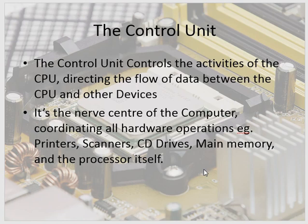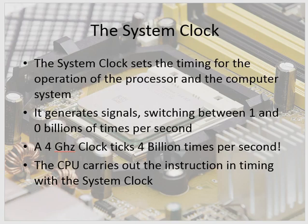The system clock sets the timing for the operation of the processor and the computer system. It generates signals switching between one and zero billions of times per second. A four gigahertz clock ticks four billion times per second. The CPU carries out instructions in timing with the system clock, which switches between one and zero billions of times per second in today's computer systems.